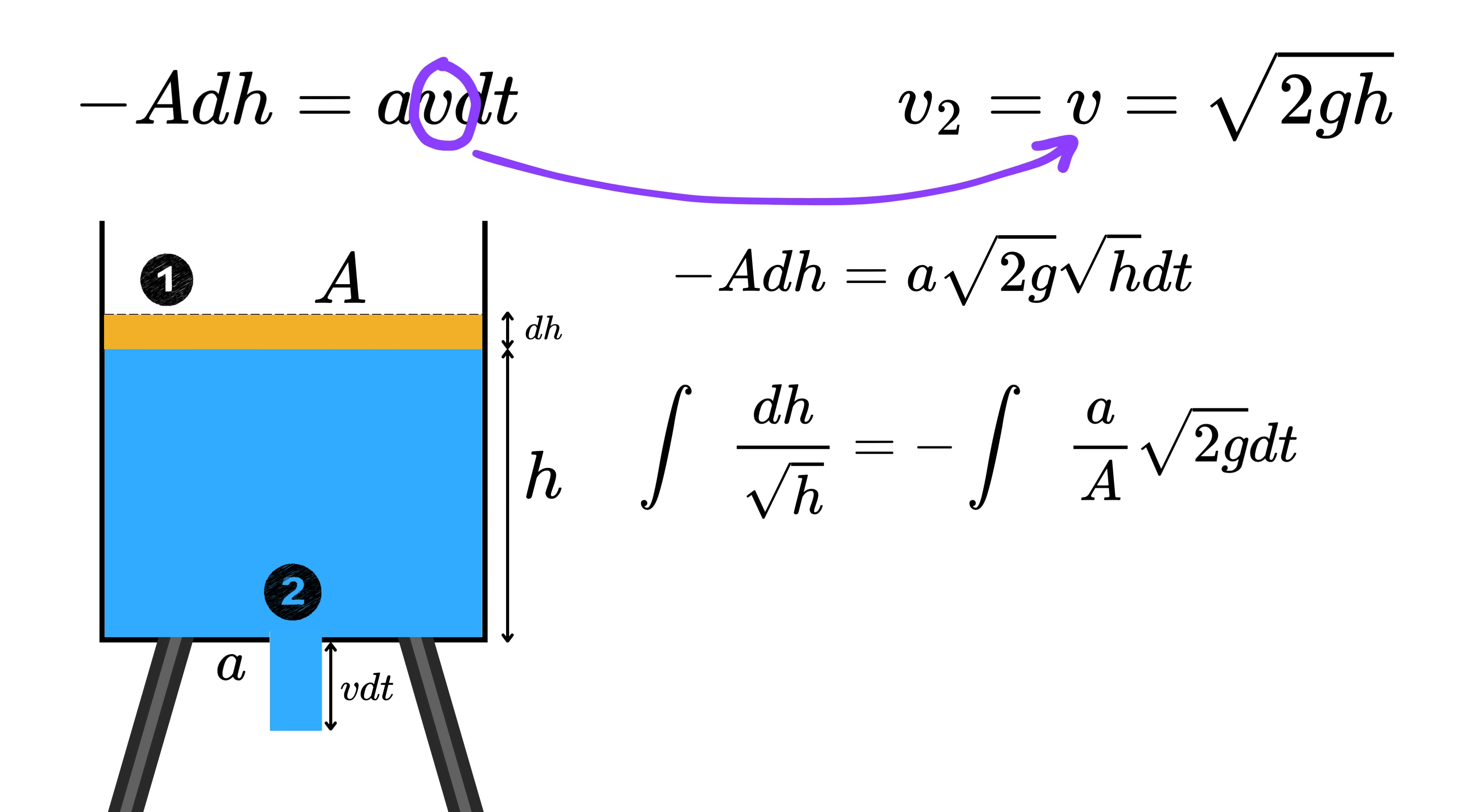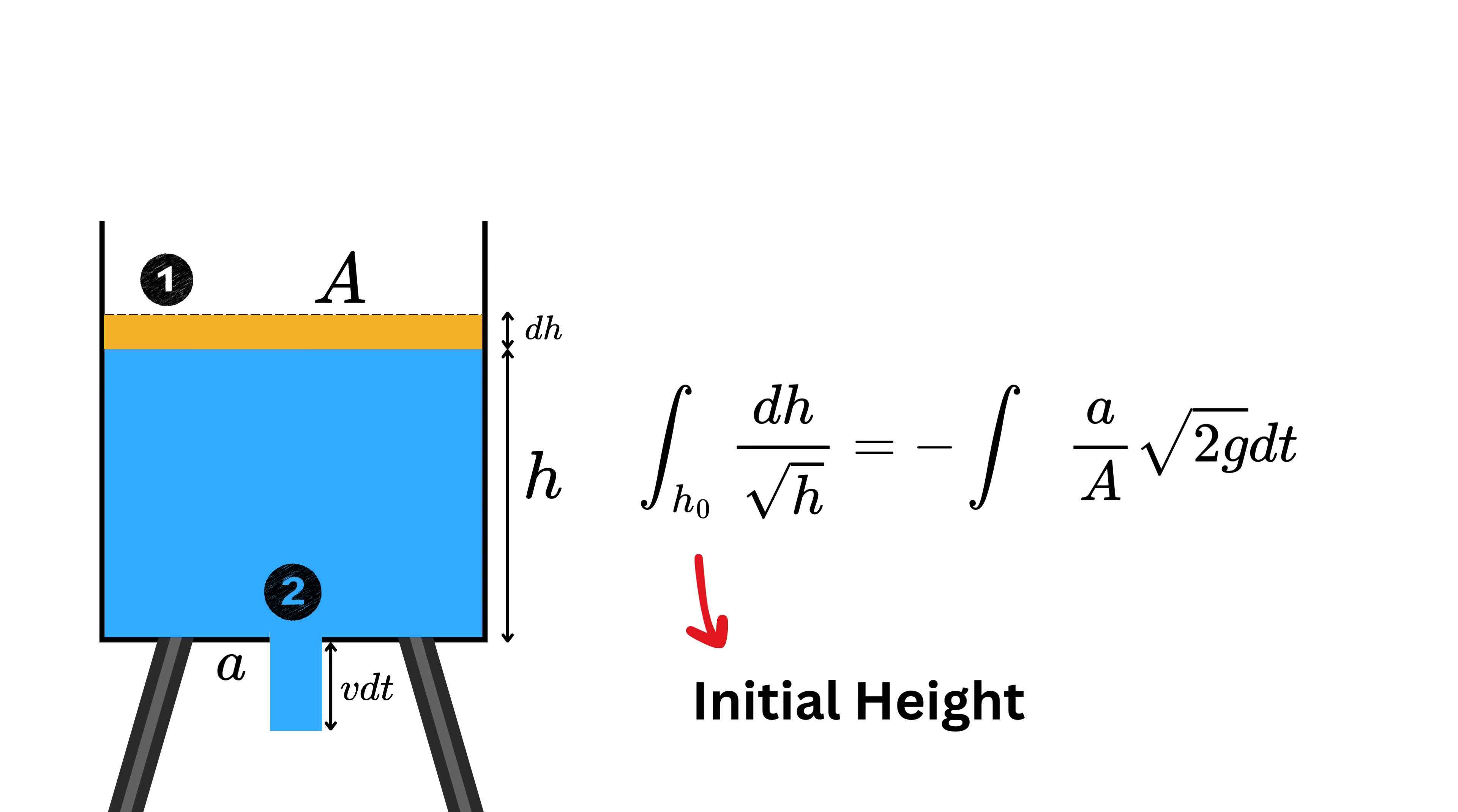Now integrate both sides. The limits of the integral will be from height h equals initial height, let's call it h sub 0, down to h equals 0 because the tank is emptying. And on the time side, it goes from time 0 to total time t. The integral of dh by root h is 2 times square root of h. But since we have a minus sign here,